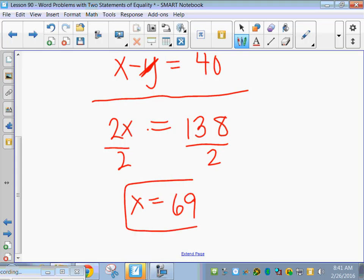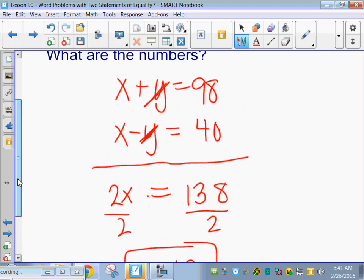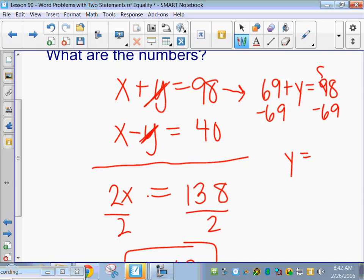So we have 69 for one answer. Go back and plug in to either equation. I'll probably use this top one. So we solve for x, we want to find y. Subtract 69 from both sides. What do we get? 29.